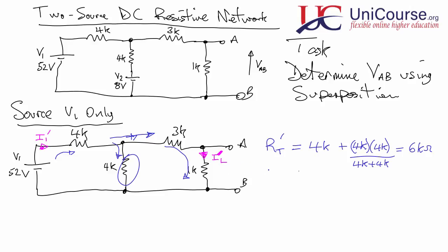In terms of the current emerging from the battery, I1' = 52V / 6k = 8.666 recurring milliamps. So we have approximately 8.6 mA flowing down that leg, and this current is going to be shared between the two parallel branches.